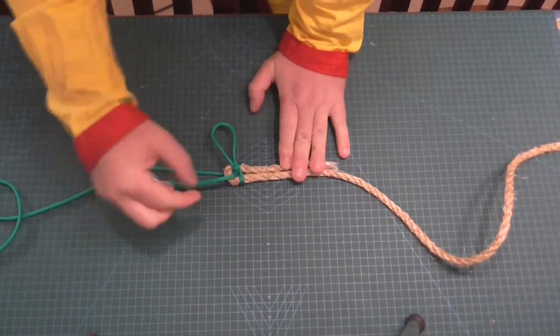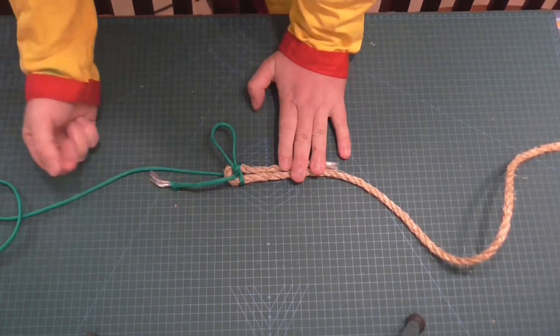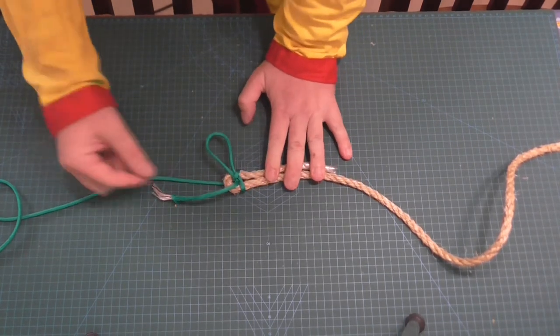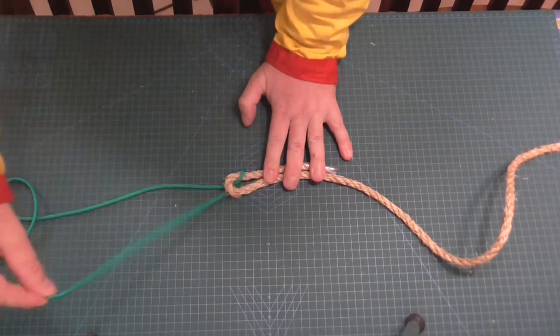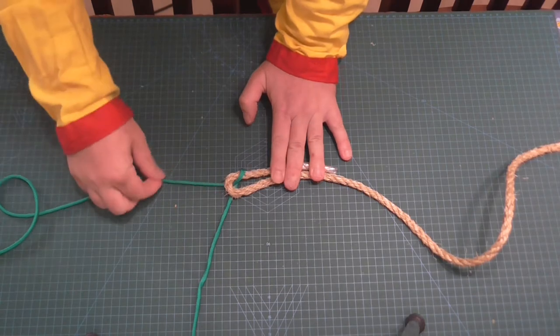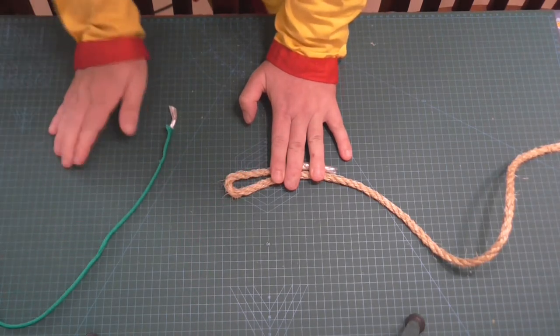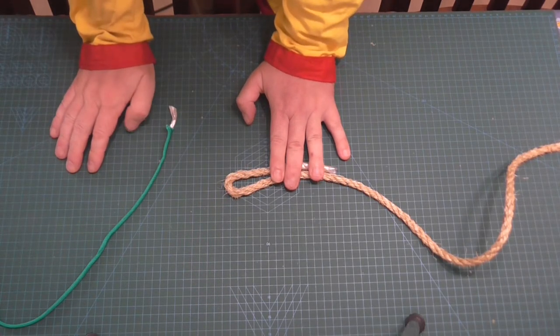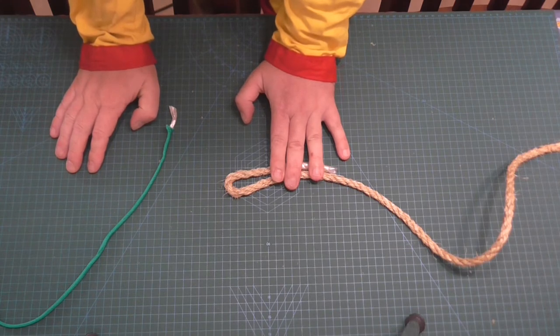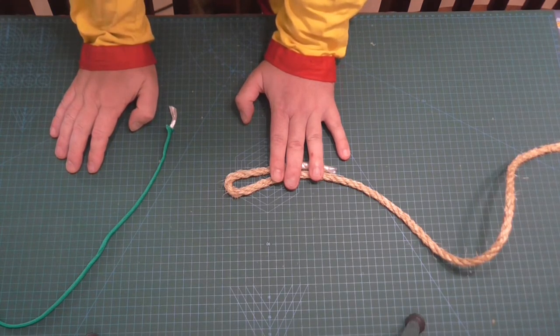So there we have a quick release version. All I need to do now if I want to undo the rope or the knot rather is just to pull on that tag and this will naturally come undone. Very simple, very easy to do, very easy to tie. Great for when you're doing washing lines and that kind of thing around your campsite.